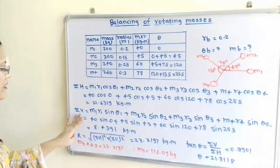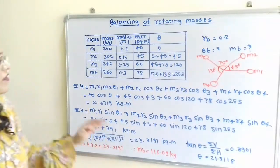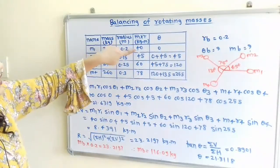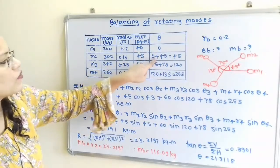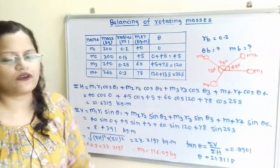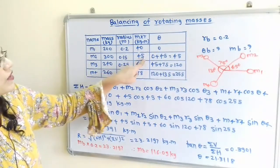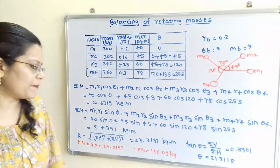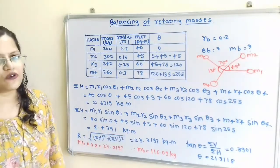In the same way we calculate the summation of all vertical components ΣV, using sin θ instead of cos θ: M1R1·sin θ1 + M2R2·sin θ2 + M3R3·sin θ3 + M4R4·sin θ4, which is 40·sin0° + 45·sin45° + 60·sin120° + 78·sin255°. Solving this gives ΣV = 8.4391 kg·m.